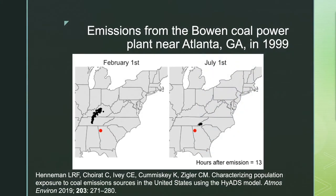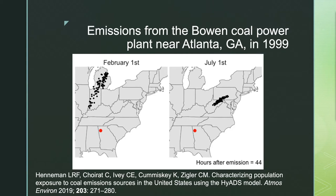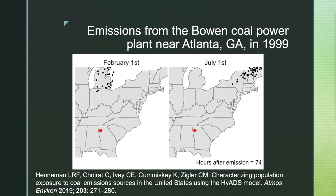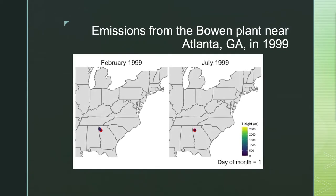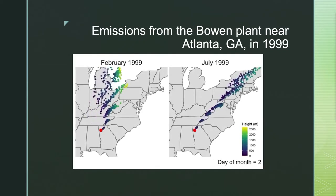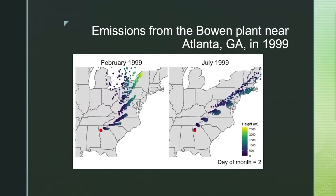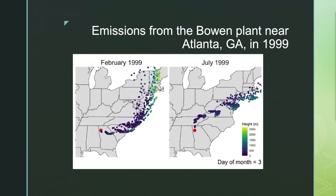The HIADS model, created by Lucas Henneman and colleagues, merges air pollution emissions data with meteorological records to model where pollution from coal power plants goes after it's emitted. Using this model, we can look at any U.S. plant and see where its emissions dispersed and who was impacted.